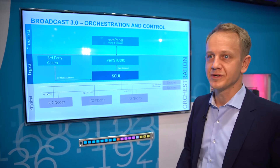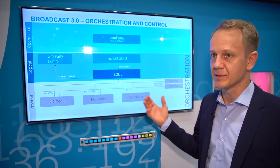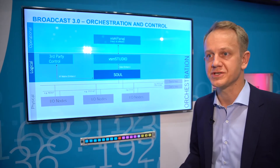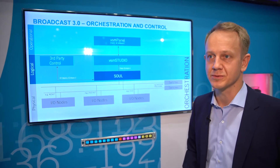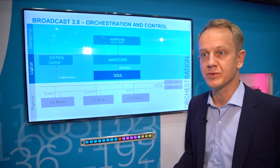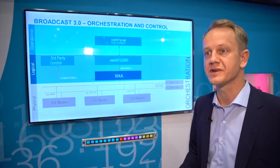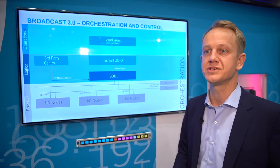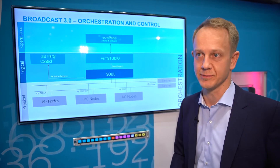SOL controls multi-vendor APIs to enable routes. SOL provides patching but also clean switching. SOL monitors bandwidth and it offers alternative routing mechanisms when IGMP reaches limitations.